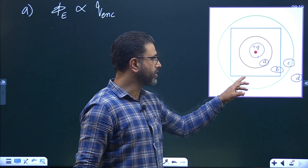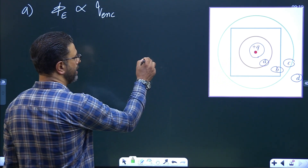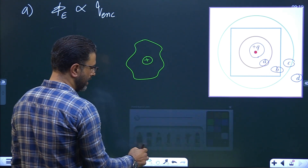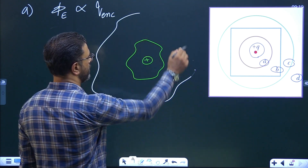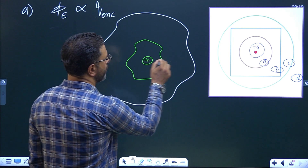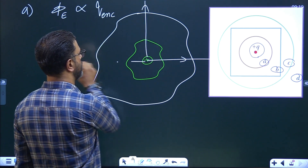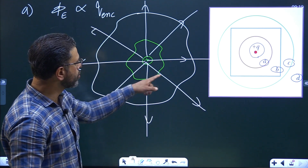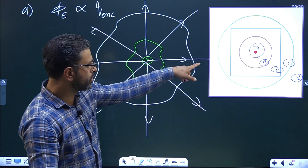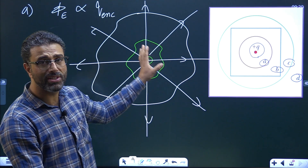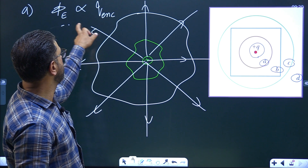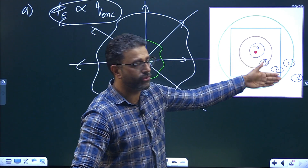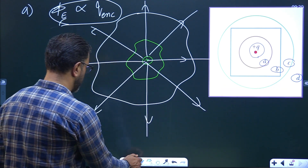We can also think about it diagrammatically. If we have a positive charge and some surfaces around it, and we draw the field lines, every field line that crosses the smaller Gaussian surface also crosses the bigger one. So the flux through them is the same. Quantitatively, the charge enclosed is the same, so the flux is the same. The flux through all four Gaussian surfaces is going to be the same — so Part A, all of them tie.